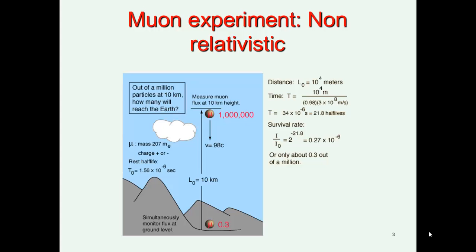So if we look at muons in a non-relativistic manner, what we have here, I've got a rest half-life of 1.56 times 10 to the minus 6 seconds. So a slight adjustment on that earlier value, but that's fine. And what we say here is if the distance from where the muons are created to the ground is about 10 kilometres.